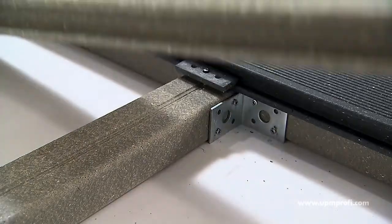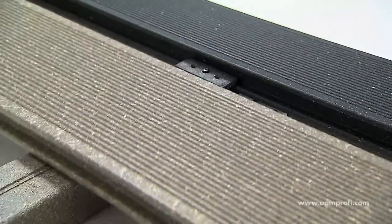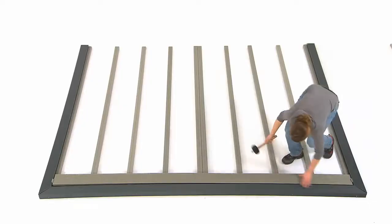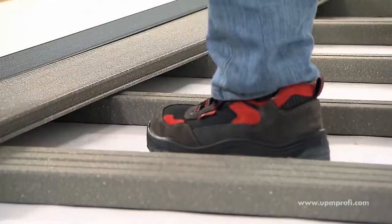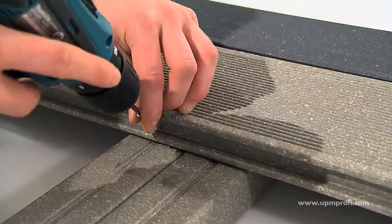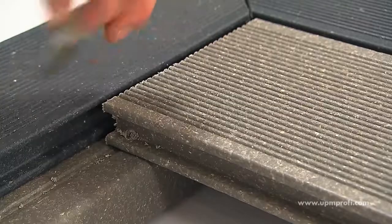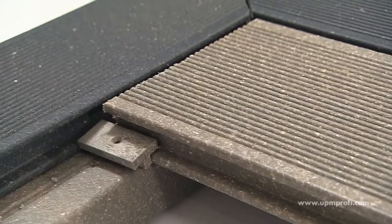Align the first UPM Profi deck board with the clips and using a rubber hammer tap the deck board into position. At the center of the board in one place only, screw directly through the tongue into the support rail. This holds the deck board in place but still allows controlled expansion and contraction along the length of the board.